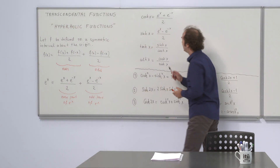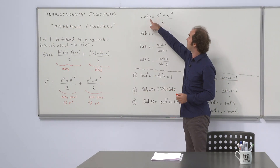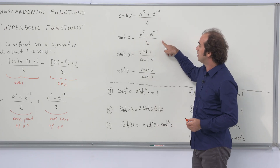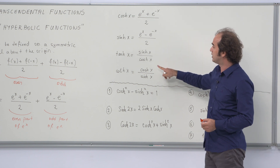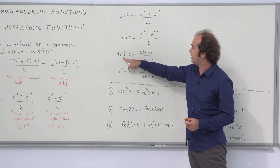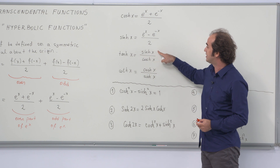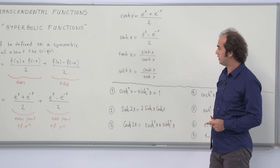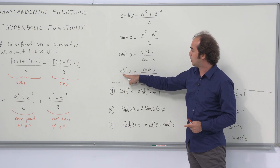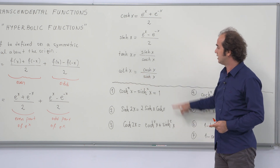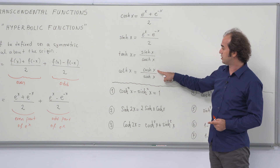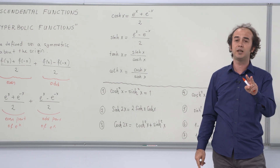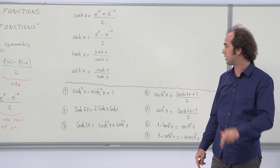There they are — the definition of hyperbolic cosine of x and hyperbolic sine of x. Based on these two, you can also define hyperbolic tangent of x as the ratio of hyperbolic sine to hyperbolic cosine, and hyperbolic cotangent of x as the ratio of hyperbolic cosine to hyperbolic sine. You can also define hyperbolic secant of x and hyperbolic cosecant of x.